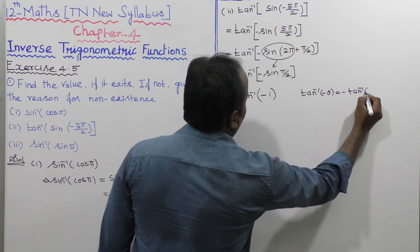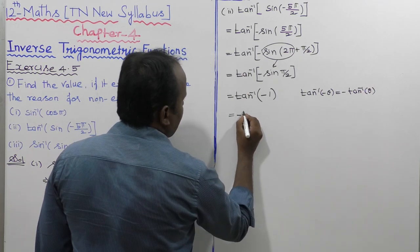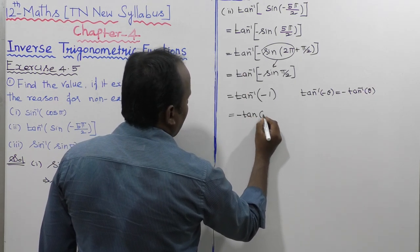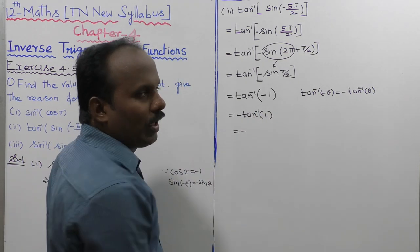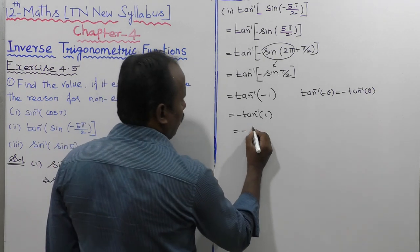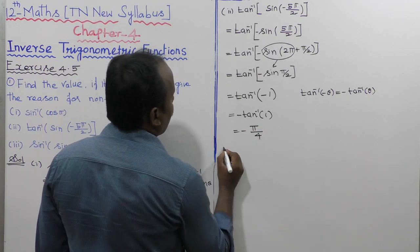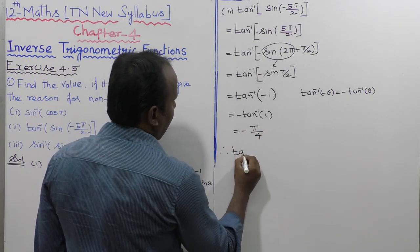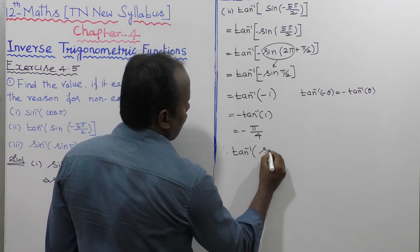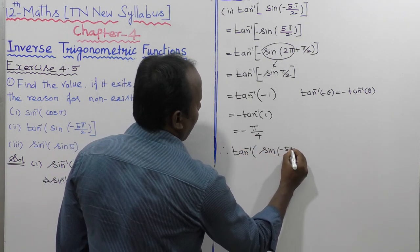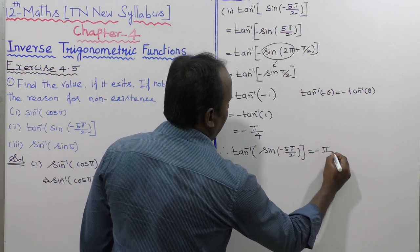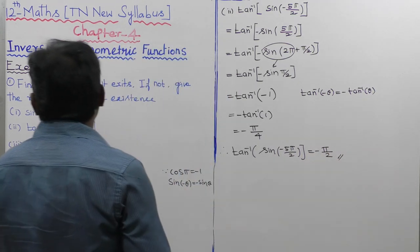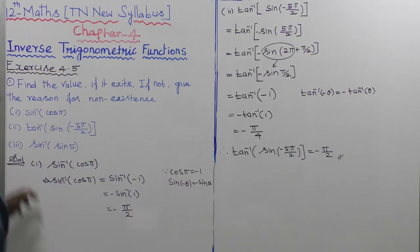Using the formula tan inverse of minus theta equals minus tan inverse of theta, so this is minus tan inverse of 1. tan inverse of 1 equals 45 degrees, and 45 degrees in radians is pi by 4. Therefore tan inverse of sin of minus 5 pi by 2 equals minus pi by 4. Second subdivision is complete. Next, going to the third subdivision.